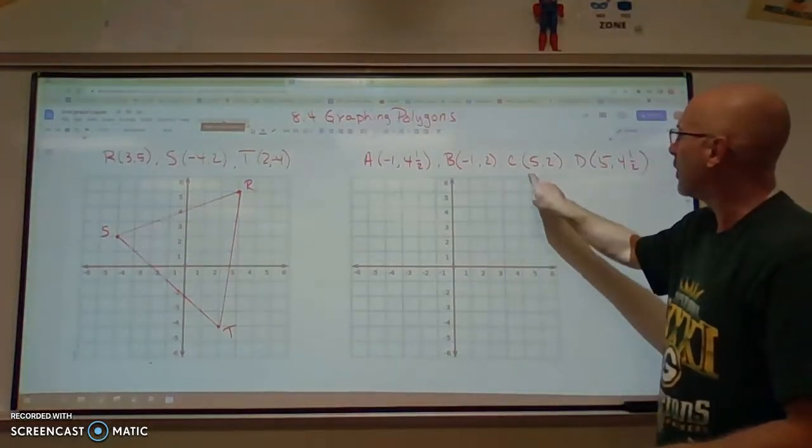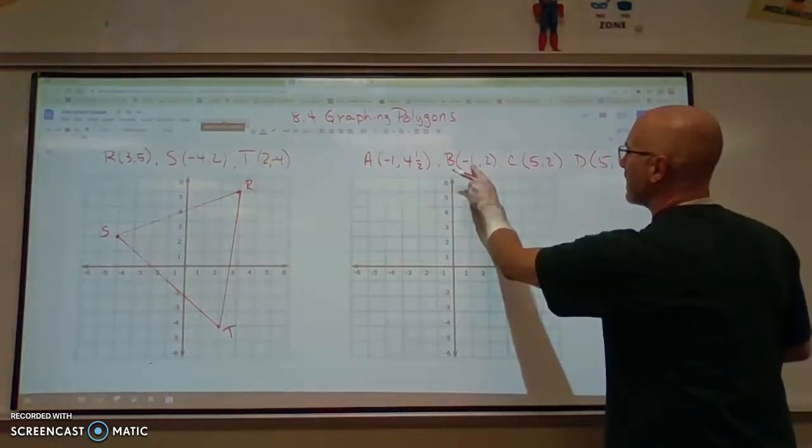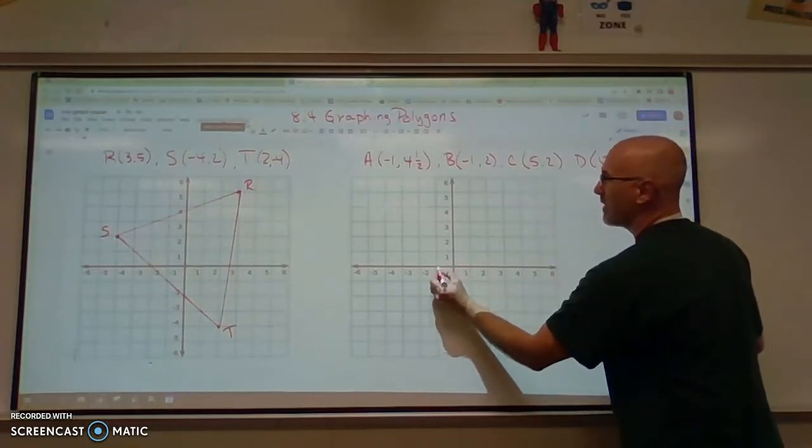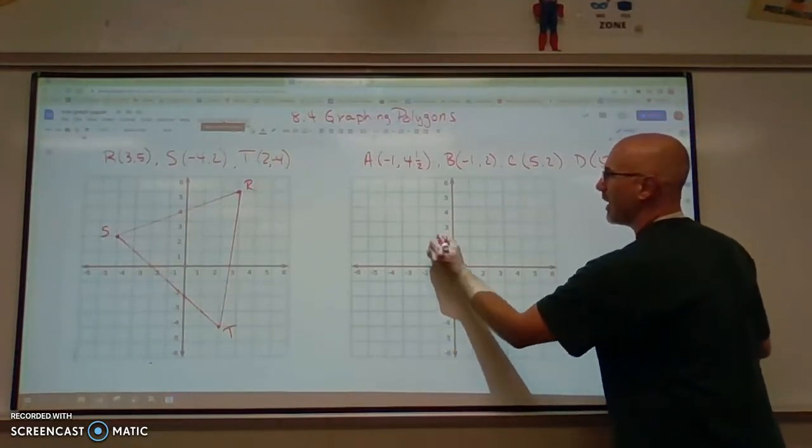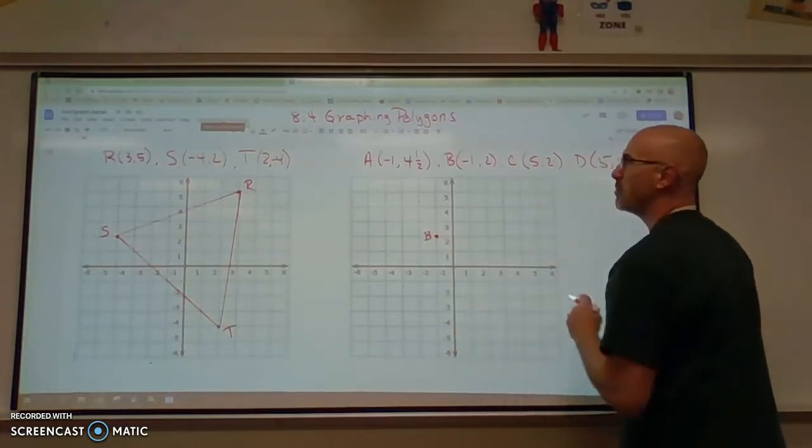Let's plot the points that don't have the fractions first. So point B is at negative 1, 2. So we're going to go negative 1 in the x direction and positive 2 in the y direction. So that is point B.